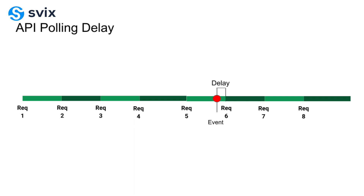Zapier did a study on this, and about 1.5% of API polling requests actually find an event update. So that's something like 65 to 66 times more efficient for webhooks in the average case.